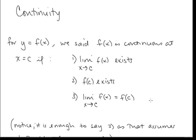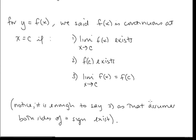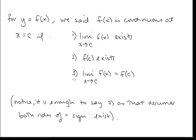This is our definition of continuity. Notice that it's enough to talk about just the third statement, because if we say f(x) is continuous at x = c and that holds, we're assuming that both sides of the equal sign exist. So we could shorten the definition of continuity to just that third statement.